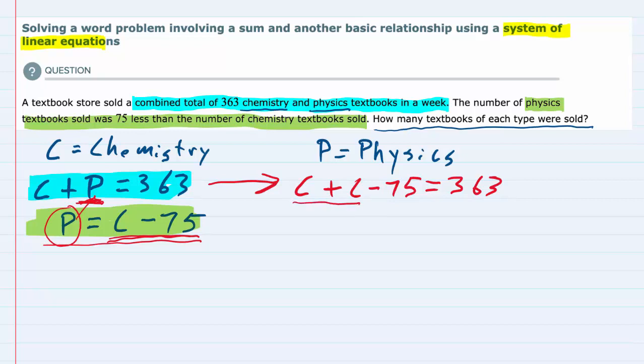We can simplify this. C plus C is 2C minus 75 equals 363. Add the 75 over to get the C by itself. The 75's will cancel, leaving me with 2C on the left equals 438.